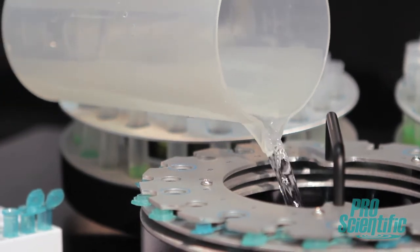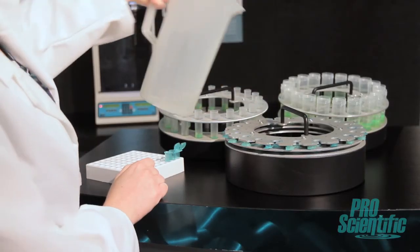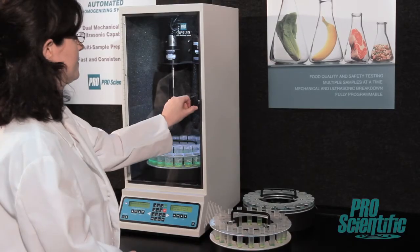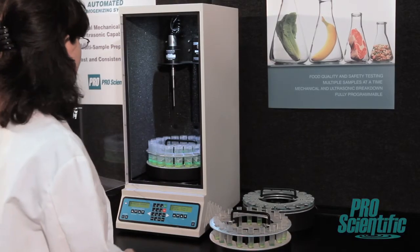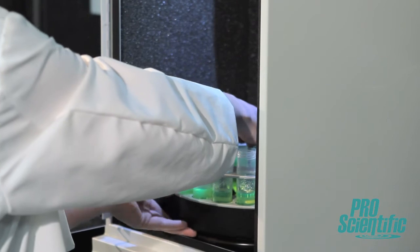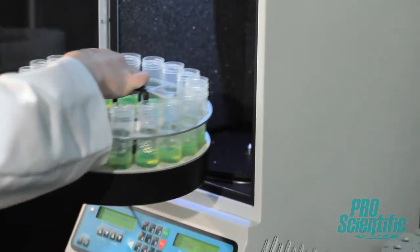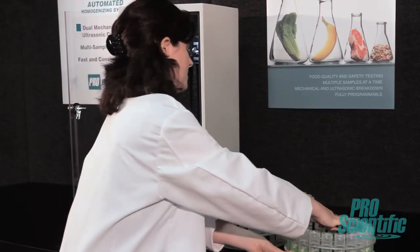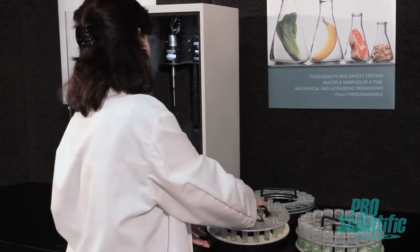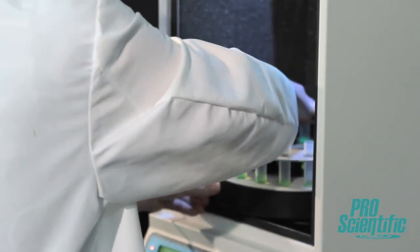This is ideal when using the DPS20 as an automated sonicator. High throughput is easily achieved when using the DPS20. With it, you can efficiently process up to 20 samples in one run that lasts mere minutes. Additional carousel trays can be purchased for standby and are easily loaded and unloaded.